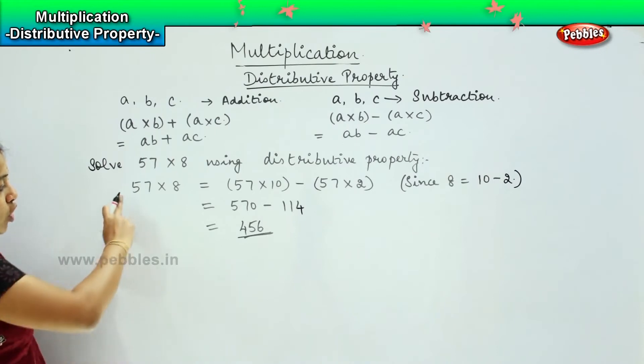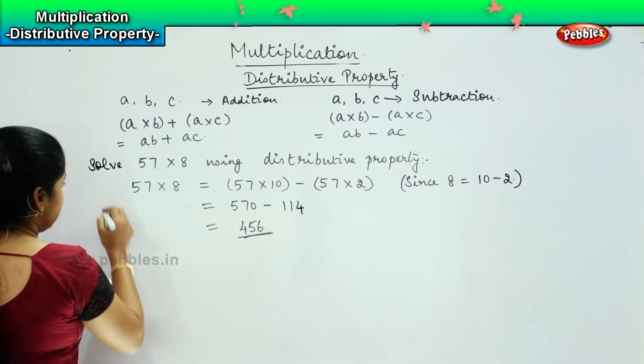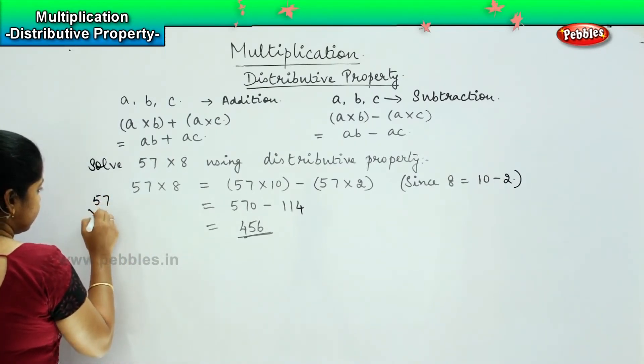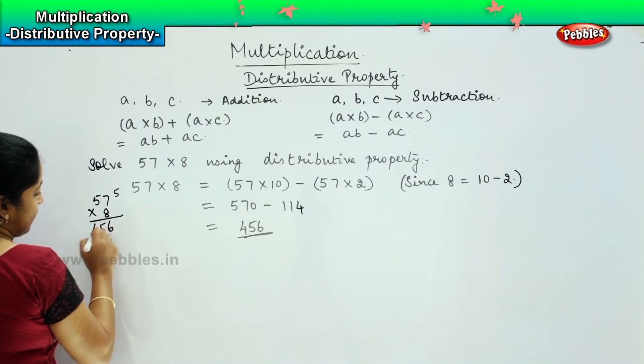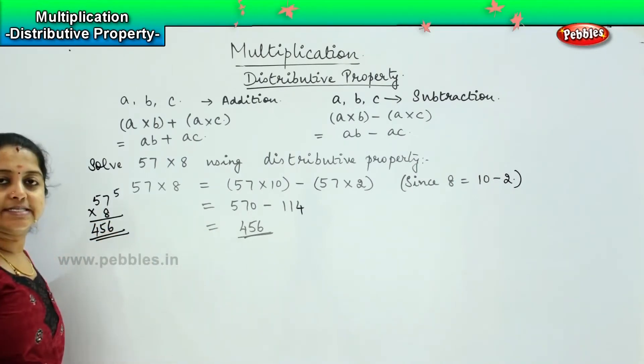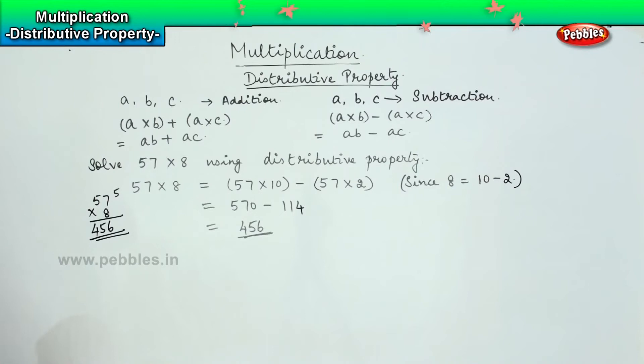Now, let us try to solve this directly using multiplication. If I solve 57 into 8 here, 7 times 8 is 56, carry 5. 5 times 8 is 40, 40 plus 5 is 45. So, in both cases, I get the same answer.